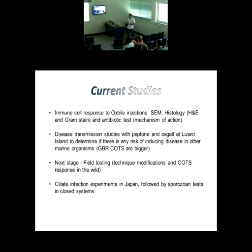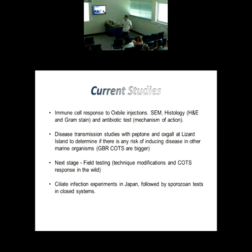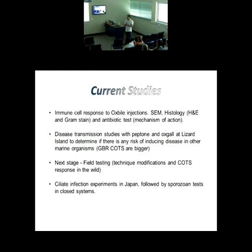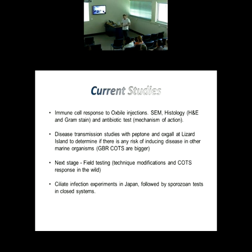We're going to do histology studies — hematoxylin and eosin, and gram stain. The gram stain is very important because it differentiates between gram-positive and gram-negative bacteria, so we will know if bacteria are involved in the disease or not. Finally, we're going to do an antibiotic test — if we put antibiotics in the aquarium and the Crown of Thorns don't die, that means other mechanisms of disease are involved, such as apoptosis or necrosis.